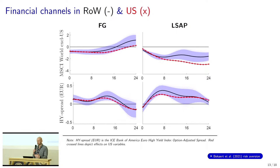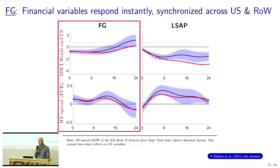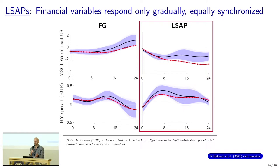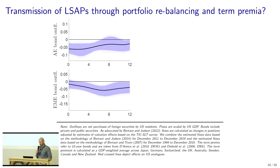Here you see the effect of forward guidance and LSAP shocks on rest-of-world and US equity prices in the first row — rest-of-world effects in black solid line, US effects in red cross lines — and in the second row, risky spreads in the US and the rest of the world. For forward guidance, we find an immediate tightening of global financing conditions, very much synchronized across the US and the rest of the world. For LSAPs, we also find very strong synchronization in financial conditions, but the tightening plays out only gradually over time, which can potentially be rationalized by the fact that many LSAP shocks around FOMC meetings are actually related to announcements of future purchases and sales by the Fed.